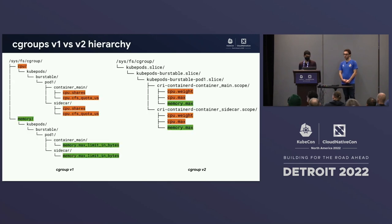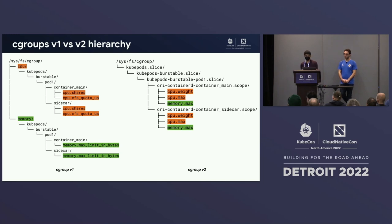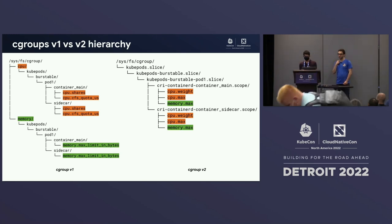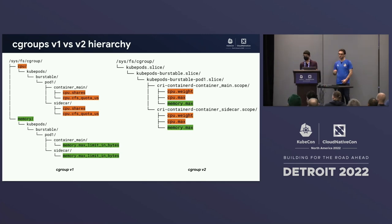In cgroup V1, the CPU and memory controllers are mounted separately, and you add your process to each separately. It's more flexible but clunky. In practice, you'd end up putting them under the same hierarchy anyway. With V2, there is a single unified hierarchy of cgroups, and all settings for a particular cgroup are under a single directory. That's the unified hierarchy.